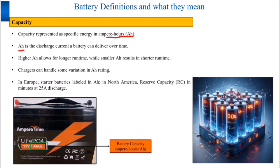What about charging batteries with a different Ah rating? A charger can handle some variance in Ah ratings as long as they have the same voltage and chemistry. A larger battery will take more time to charge than a smaller one, but the Ah difference should not surpass 25% to ensure compatibility and efficient charging times.